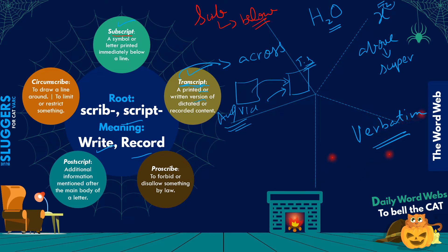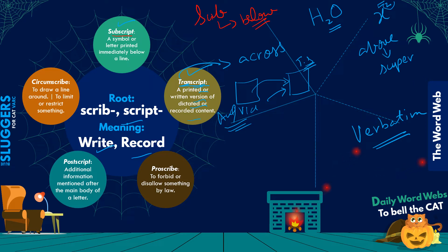A transcript is a printed or written version of dictated or recorded content — for example, the transcript of an interview. Now, when talking about shows, movies, or sitcoms — sitcom is short for situational comedies, by the way — these shows don't always happen impromptu. First a story is written, and there's a writer involved. The thing that a writer writes, upon which the entire play, movie, or show is based—